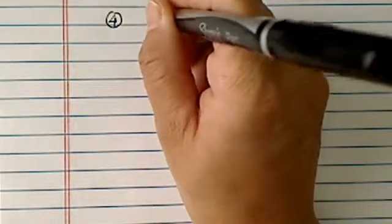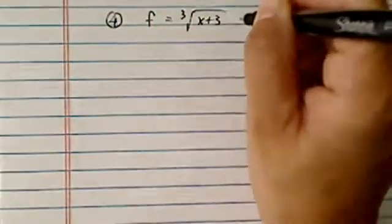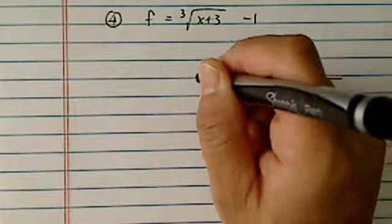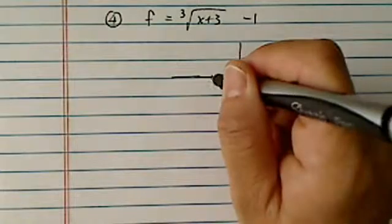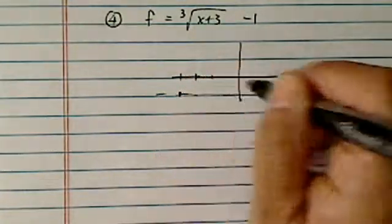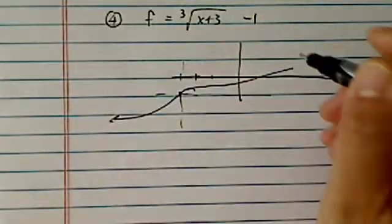I have f is equal to cubic root of x plus 3 minus 1. The graph for this one, it's an odd function. When x equal to minus 3, we have an interesting 0 here, and it's minus 1. So the curve looks like a cubic, but shifted. Cubic root.